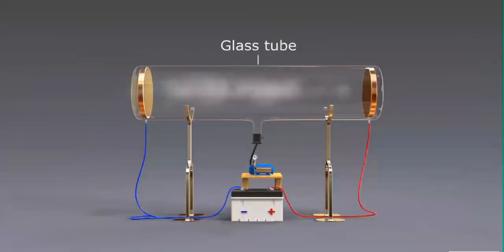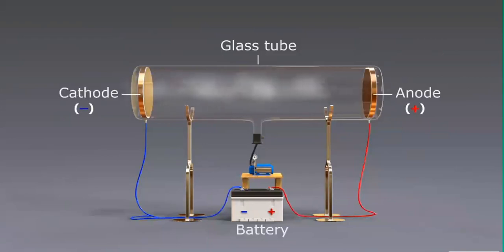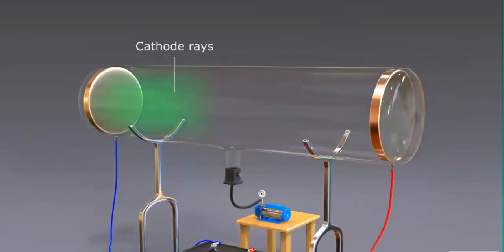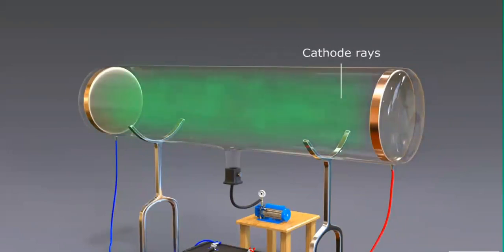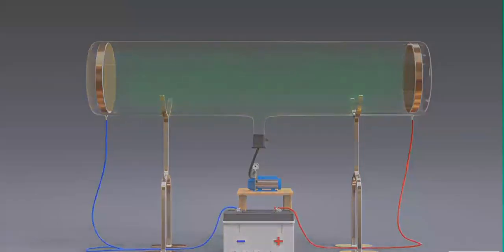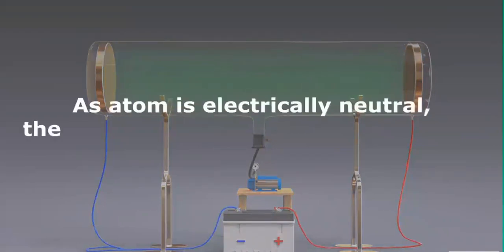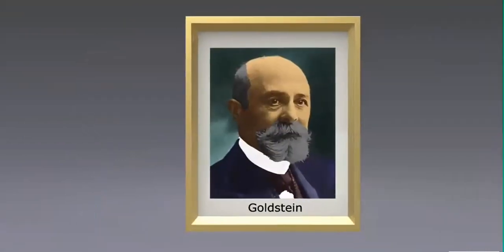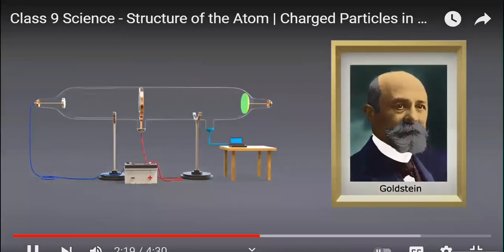The cathode ray tube experiment consisted of a glass tube containing gas and two electrodes at its ends, with gas at very low pressure maintained by vacuum pumps. On passing electric discharge, cathode rays were produced, which were attracted towards the positively charged plate. Since they were attracted to the positive plate, they were made up of negatively charged particles — named electrons by Sir J.J. Thomson. Since atoms are neutral, it was concluded that some positively charged particles must also be present. These were later discovered by Goldstein in 1886 as protons.